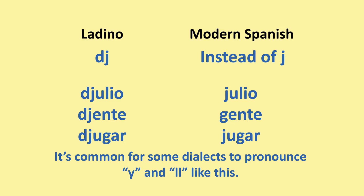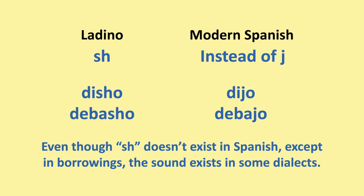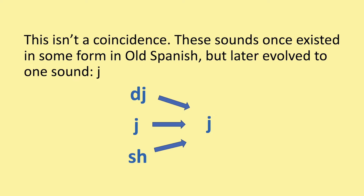The SH in Ladino is like the SH in English. For example, 'disho' or 'debasha' for 'dijo' and 'debajo'. This sound is very common in the middle of a word. Even though SH doesn't exist in Spanish except in borrowings, the sound does exist in some dialects — this isn't a coincidence, as these sounds once existed in some form in Old Spanish but later evolved to one sound: CH.